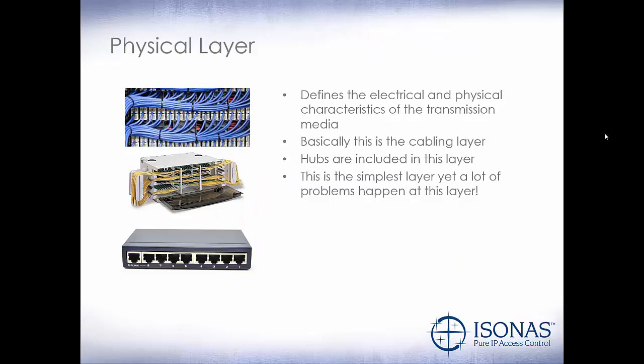We're going to talk about layers 1 through 4, starting at the physical layer. The physical layer defines the electrical and physical characteristics of the transmission media — basically, this is the cabling layer. All of your CAT5E, CAT6, and fiber connections are included in the physical layer. Hubs are also included in this layer. We don't generally see hubs anymore, but it's a good demonstration of how networks work. This is the simplest layer, yet a lot of problems happen here. If you have a bad fiber termination, a bad CAT5 termination, or your jack's not plugged in, any of those things could cause serious communication issues on the network.